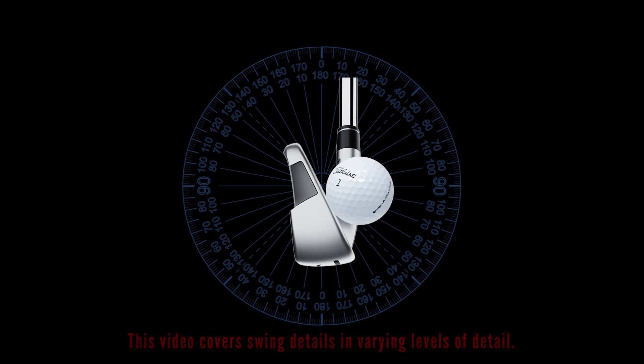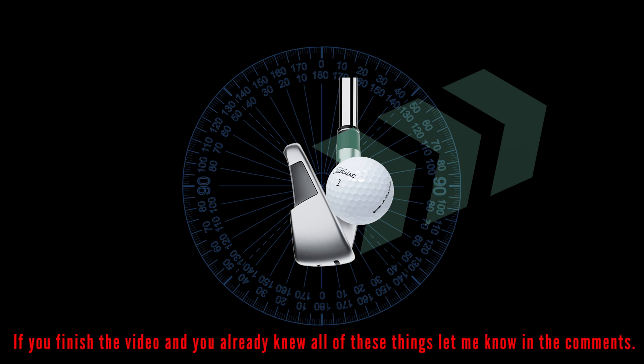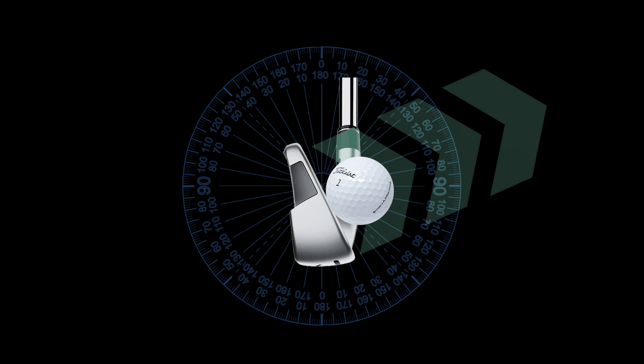The first is the height, and it's based on the loft of your club at impact and the amount of spin applied. This starts as a static loft, but it can be changed by the angle of the shaft at impact. For simplification, the ball leaves the club at the angle of the face at impact.